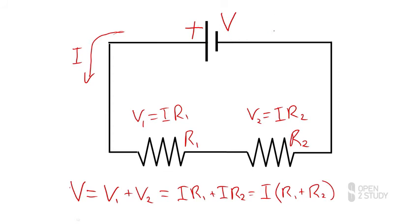And, of course, we know for the entire circuit that V equals I times the total resistance of the circuit.